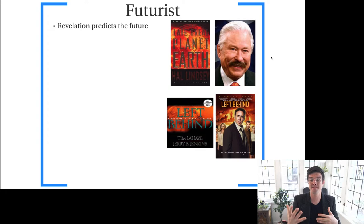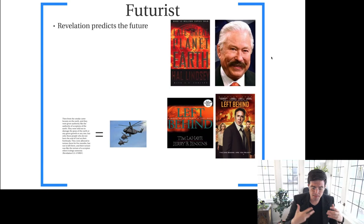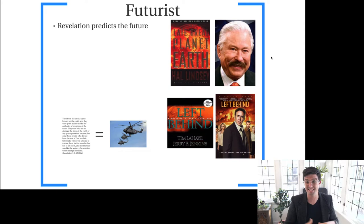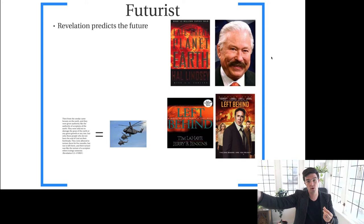This has been popularized in modern Christian culture by books like 'The Late Great Planet Earth' in the 1970s written by Hal Lindsey, or the 'Left Behind' series, which was massively popular especially amongst evangelicals but even amongst wider circles of Christians in the 1990s. This approach takes different scenes and individual images in Revelation as meant to correspond to something that's going to happen in the future.